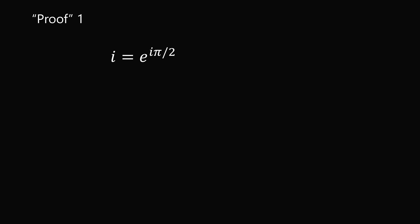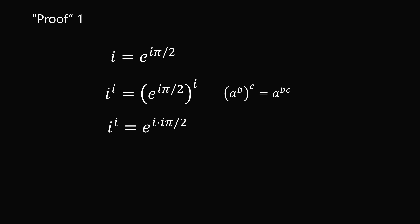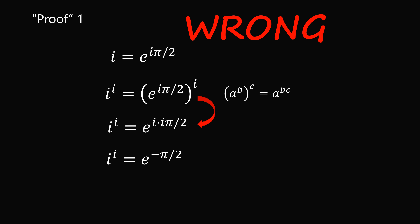Here is a supposed proof of why i to the power of i equals e to the negative pi over 2. You start with i equal to e to the i pi over 2, raise both sides to the power of i, then use the rule that (a^b)^c equals a^(bc) to multiply the exponents. So you get i^i equals e to the power of i times i pi over 2. Since i times i equals negative 1, you get i^i equals e to the negative pi over 2. We get the right answer — but between steps 2 and 3, this is actually a wrong, unjustified step in the context of complex powers.